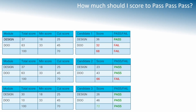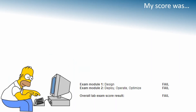In my case, my score was fail/fail, so I failed. You might be wondering how I became a CCIE — I made a second attempt and passed on that second attempt.